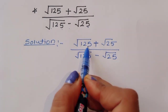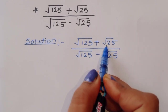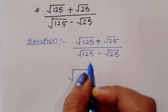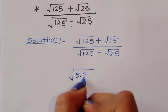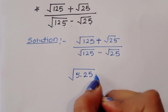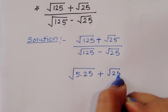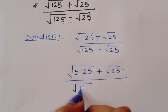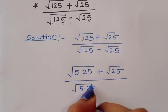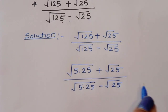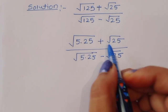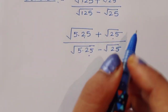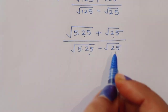We can do one thing here: 125 can be converted into 25 times 5, that is 125. So we write 5 times 25, that is 125, plus square root of 25, divided by 5 times 25 minus square root of 25. Now you can see square root of 25 appears in all terms, so we can take square root of 25 as common in the numerator and denominator.